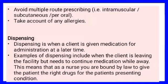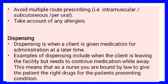The prescription should not have multiple-route prescribing — where the same drug is shown to be given orally, intramuscularly, subcutaneously, or intravenously all at the same time. This should be avoided because it can lead to harmful adverse reactions, with the drug being given via the wrong route. You should also take note of the allergies the patient is presenting with, as some patients react to certain drugs, and the prescription should specify a drug that the patient is not allergic to.